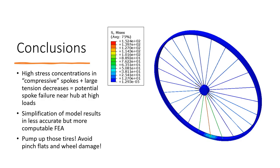To sum things up, this analysis shows that the main location for spoke failure occurs near the hub, and based on engineering judgment also near the rim. This is due to the high stress concentrations in these areas and the high flexibility in the middle of the spoke. The model was heavily simplified to make it more computable in FEA, but as a result accuracy is sacrificed. A practical tip for fellow cyclists: definitely make sure to pump up those tires — you should really be doing so before just about every ride — as that will help distribute more load away from the wheel by keeping tire pressures topped up.